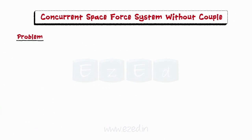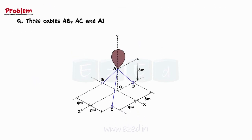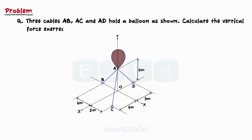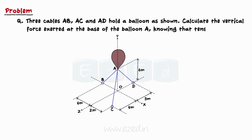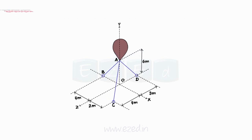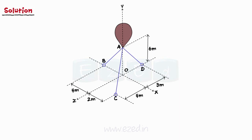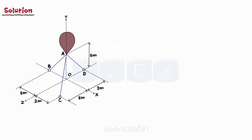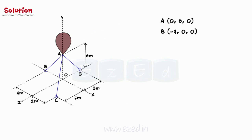Consider the problem shown alongside. Three cables AB, AC, and AD hold a balloon as shown. Calculate the vertical force exerted at the base of the balloon A, knowing that tension in cable AB is 300 N. This is an ideal case of a concurrent space force system in equilibrium. The required coordinates of the points A, B, C, and D are given.